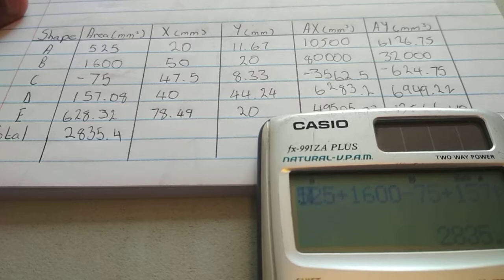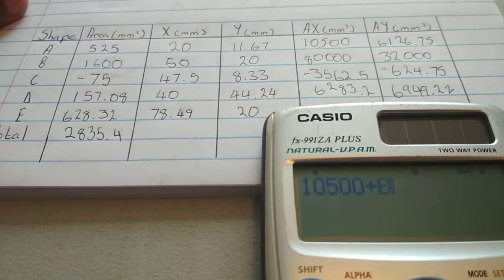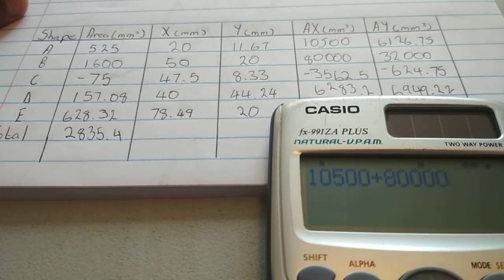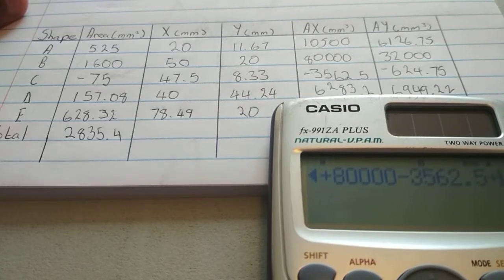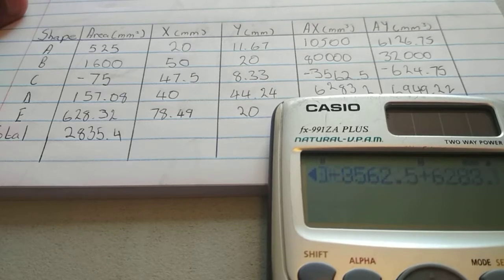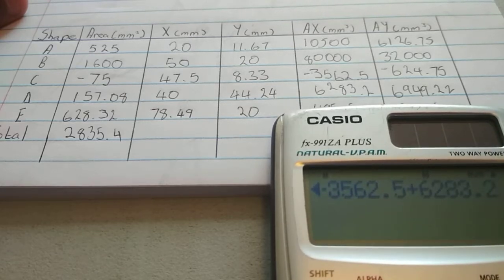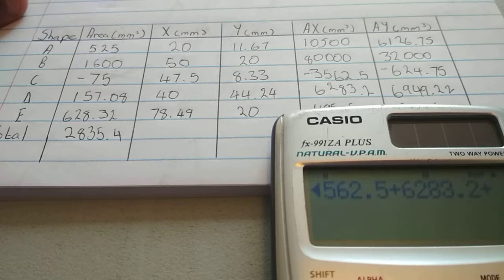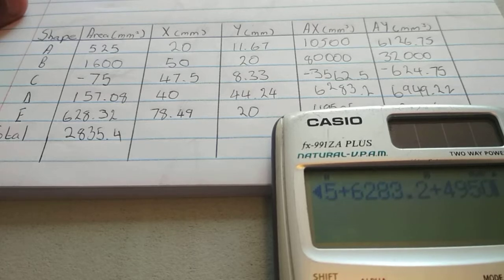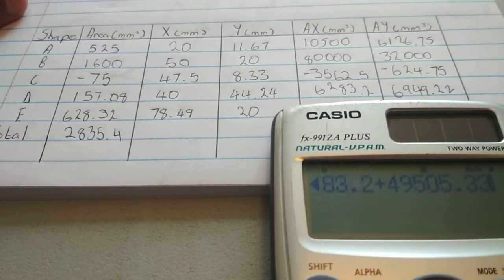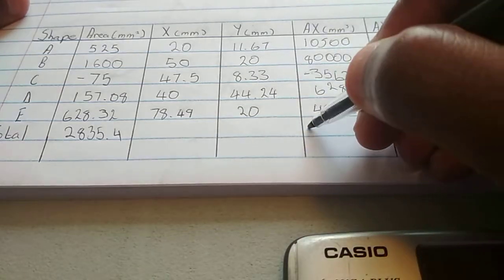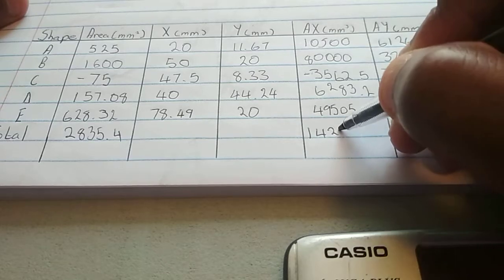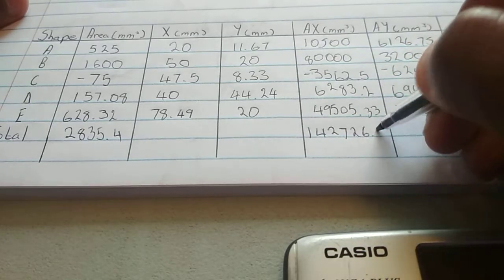So, we're going to have 10,500 plus 80,000 minus 3562.5 plus 6283.2 plus 49505.33. We'll get that big number, 142726.03.